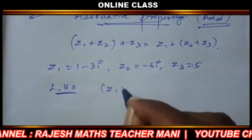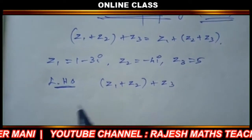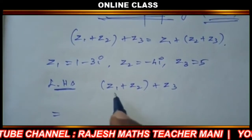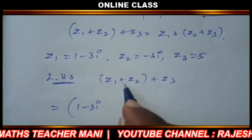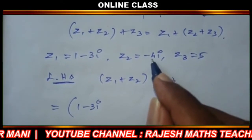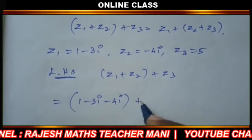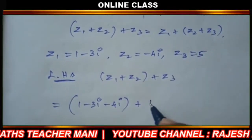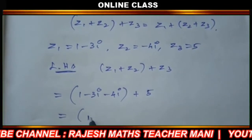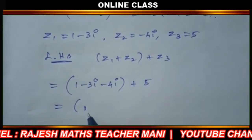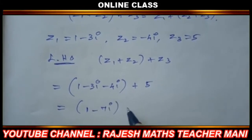Here we have z1 plus z2 plus z3. Applying the values: z1 is 1 minus 3i, z2 is minus 4i, and z2 plus z3 equals 5. Computing: 1 minus 3i minus 4i gives us minus 7i plus 5.